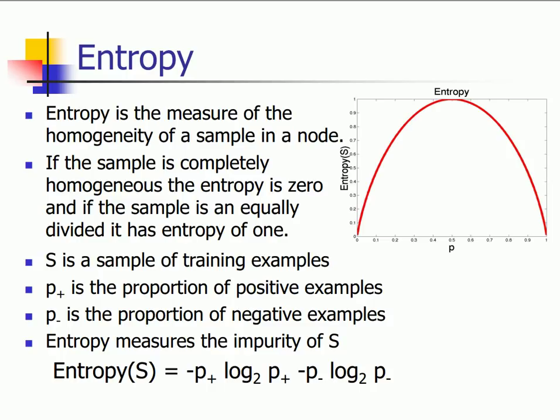If I make a split, if there are 50 percent yes and 50 percent no, that is when I say that it's not at all homogeneous. For such a case, the formula is minus p+ (that is positive)—minus the positive samples log to the base two positive samples—added with the negative samples.